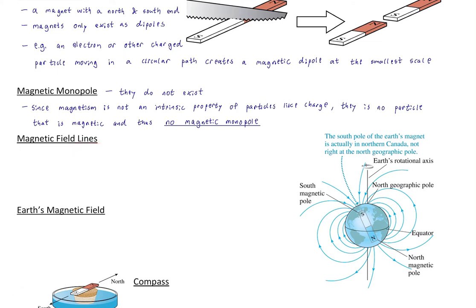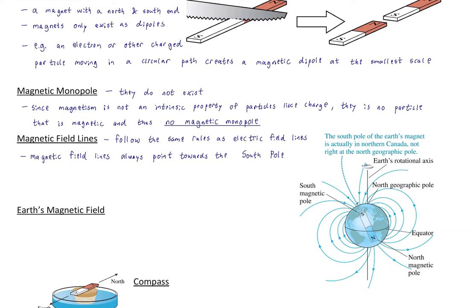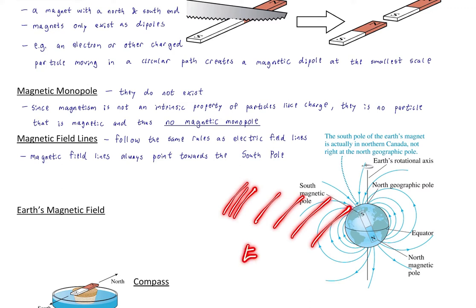Magnetic field lines — what are those? We've talked about electric field lines; magnetic field lines operate in a very similar way and follow the same rules. When field lines are closer together, that's a strong region of the field; when they're far apart, that's a weak region of the field. We use the uppercase letter B to denote the magnetic field. Magnetic field lines always point towards the south pole, similarly to how electric field lines always point towards negative charge.